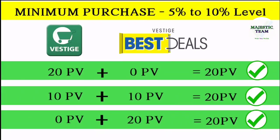If you need to set things right, how can you do the minimum purchase? I'm going to explain to you clearly. For example, you can do 20 PV in the POS App.